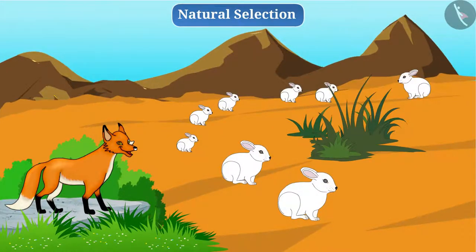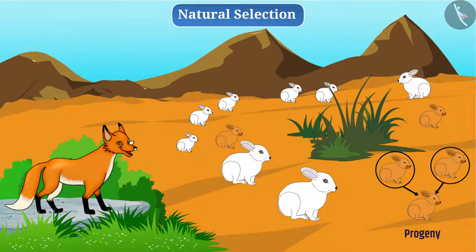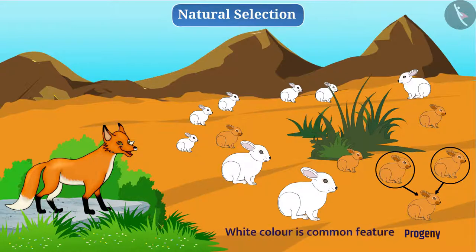We know that sexual reproduction produces variations in the population of all organisms. Suppose there is an occurrence of color variation during reproduction of white rabbits. Due to this, brown rabbits also appear in the population. Brown rabbits will give their brown color to their progeny, so all their offspring will be brown. The number of white rabbits is higher than brown rabbits, so white color is a common feature in this situation.